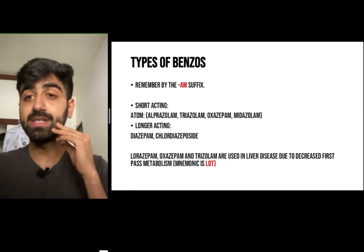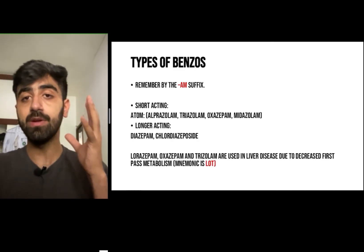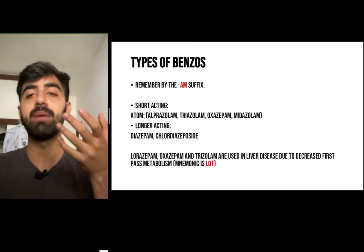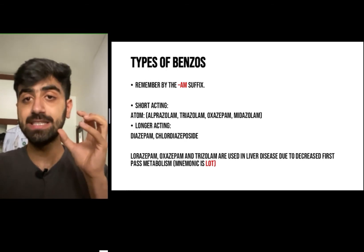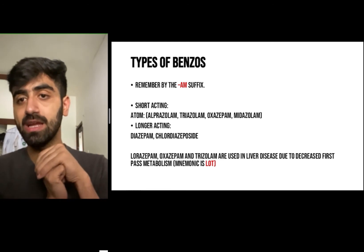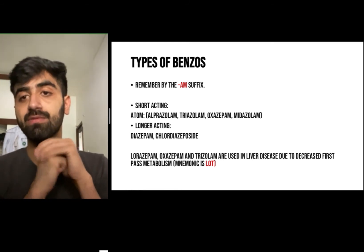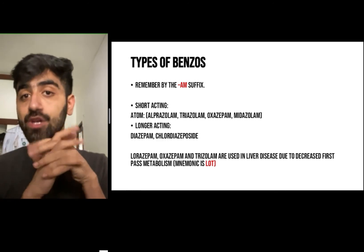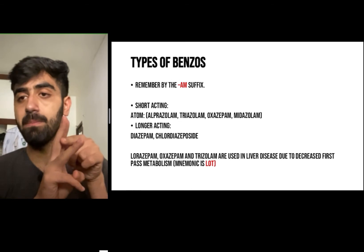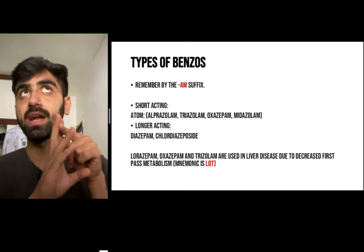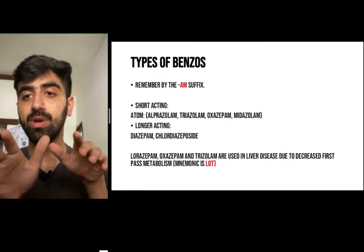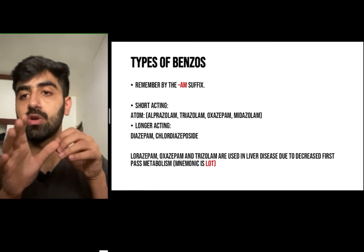Let's remember the types of benzodiazepines. You can identify them by the '-am' or '-pam' suffix — for example, alprazolam, triazolam, oxazepam. They are divided into shorter-acting and longer-acting. Shorter-acting ones can be remembered with the mnemonic ATOM: alprazolam, triazolam, oxazepam, and midazolam. Longer-acting ones include diazepam and chlordiazepoxide — chlordiazepoxide is an exception to the naming rule.